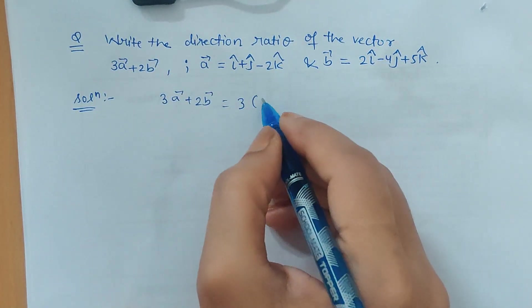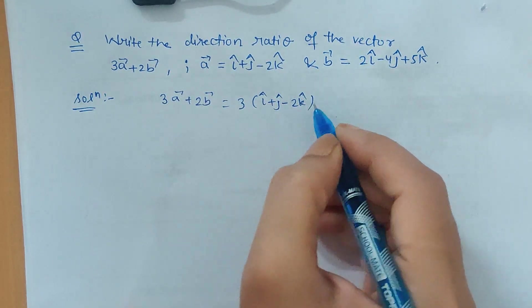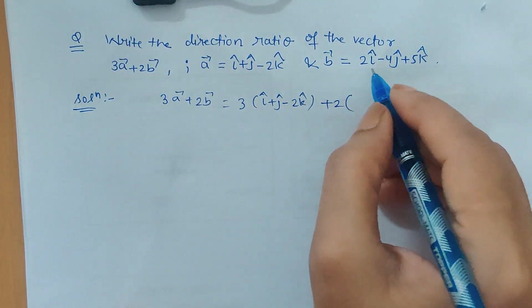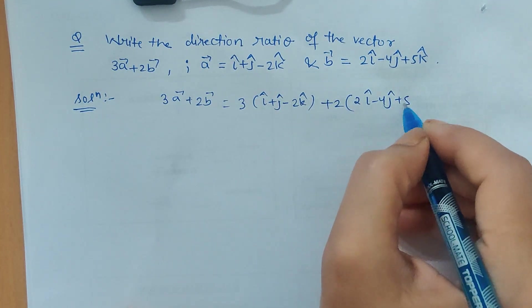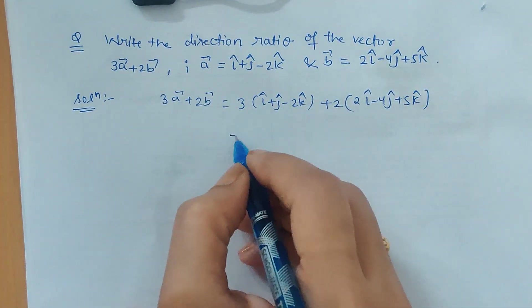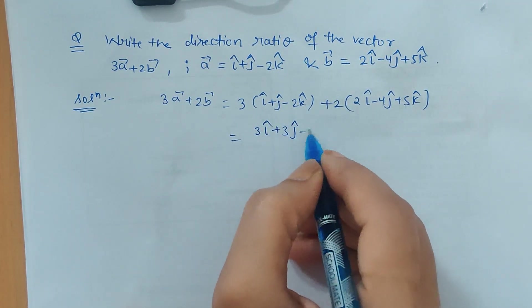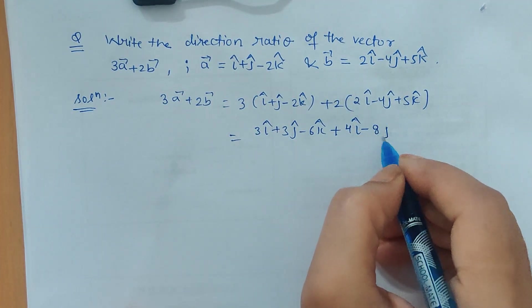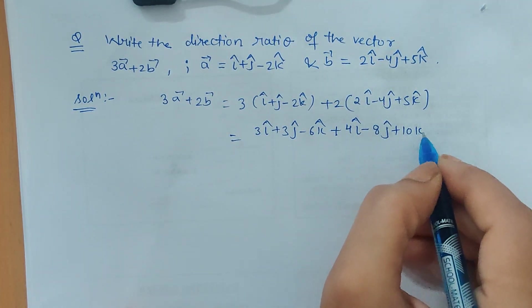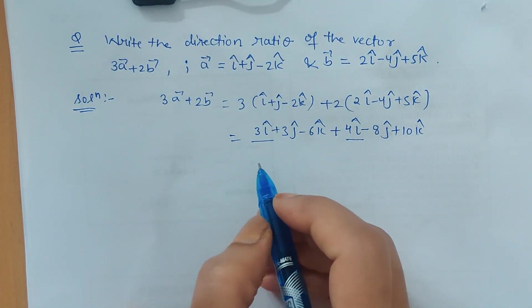This will be 3 times a vector, so substitute the value of a vector from the equation, plus 2 times the value of b vector, which is 2i cap minus 4j cap plus 5k cap. Simply solve it: 3i cap plus 3j cap minus 6k cap plus 4i cap minus 8j cap plus 10k cap. Now just add the like elements.